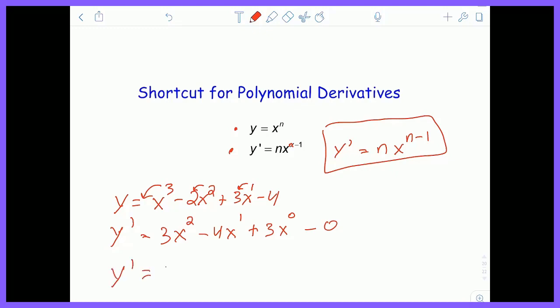So the derivative of that thing simplifies to 3x squared minus 4x plus 3, just as a simple polynomial shortcut.